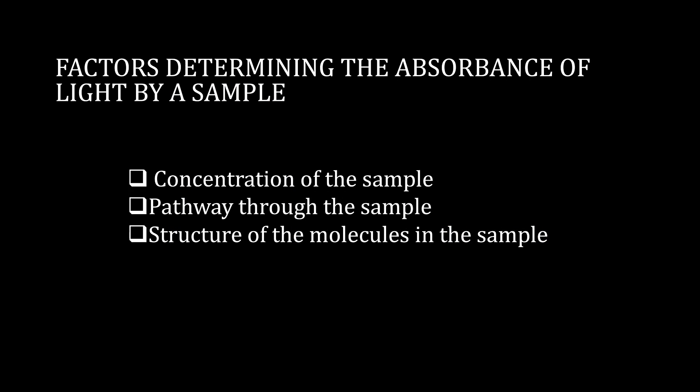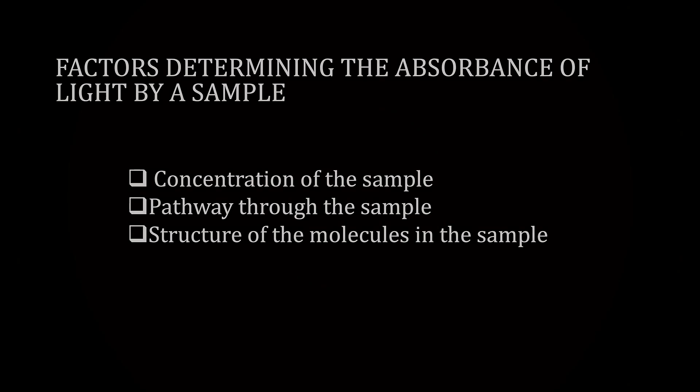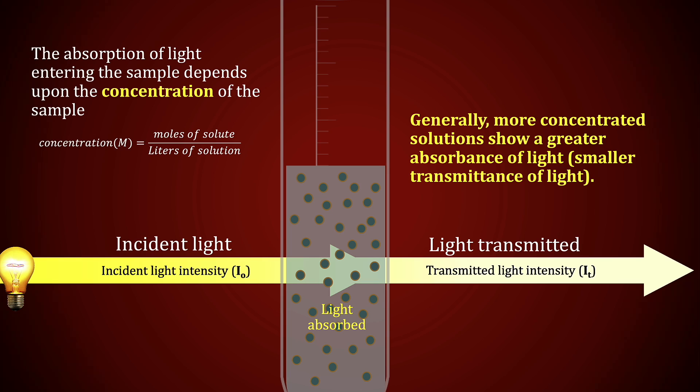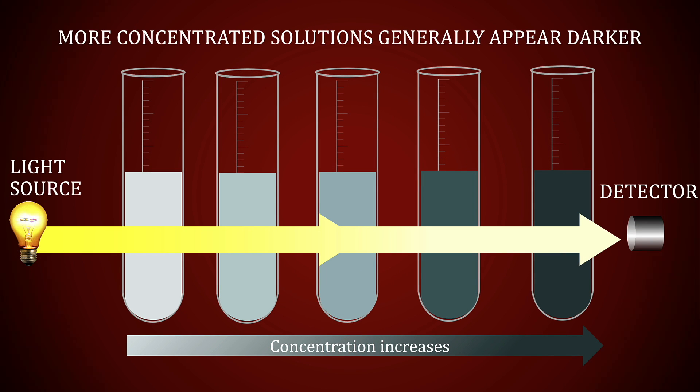The factors that affect the absorbance of light are the following: the concentration of the sample, the pathway through the sample, as well as the structure of the molecules in the sample. The concentration of the solution refers to the number of solute particles in the sample per unit volume. Generally, having more particles in solution will correspond to a greater absorbance, because more particles will allow less light to reach the detector. In other words, the intensity of the light reaching the detector will be lower in solutions containing more solute particles.